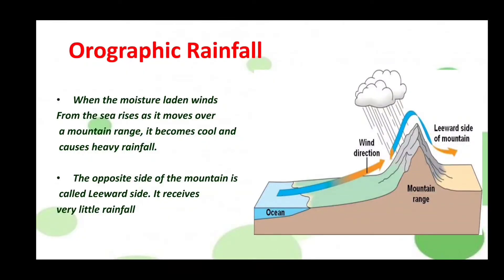The next type is orographic rainfall. When the moisture-laden winds from the sea rise as they move over a mountain range, the air becomes cool and causes heavy rainfall. The moisture-laden winds — that is, winds from the sea containing a lot of moisture — rise and move over the mountain, become cool, and cause heavy rainfall.